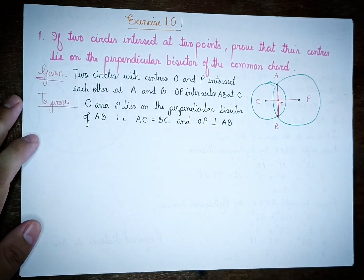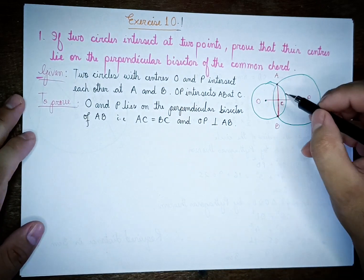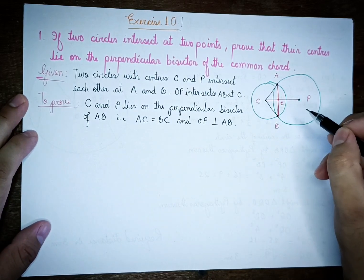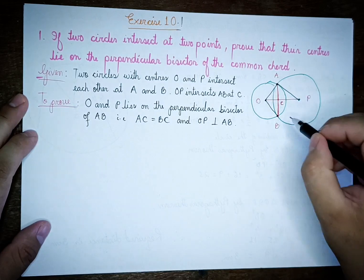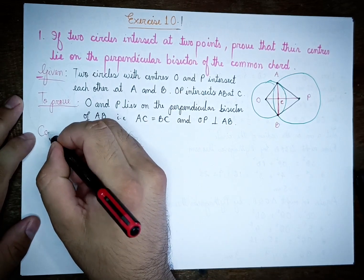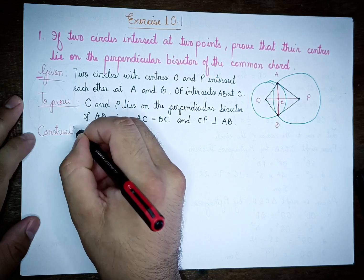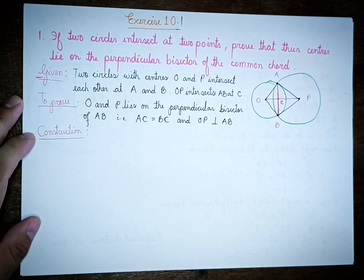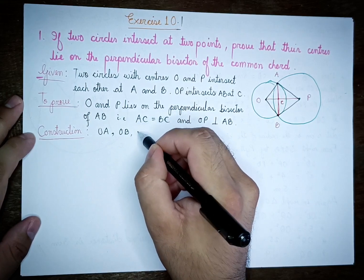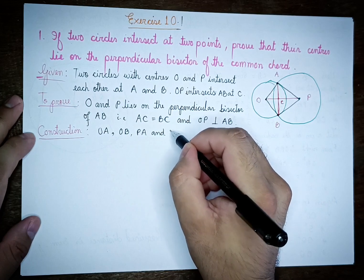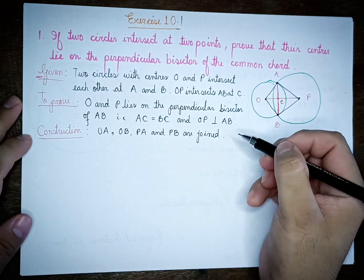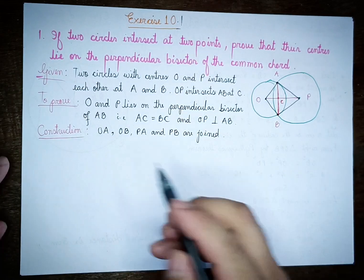We call this a construction. We join A, B, C, and O, P. We join the points to form a construction. Join O and P. It is a join. Can you prove it? Proof.